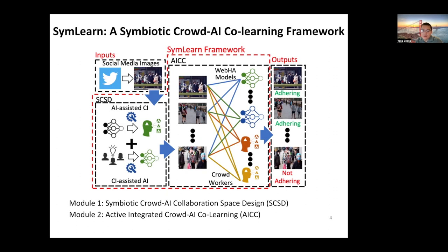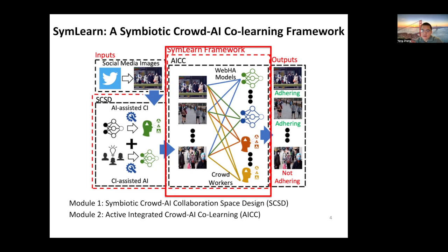In particular, we first design a novel search space for crowd-AI collaboration, which provides flexible options for SyMLearn to identify a collaborative set of AI models and crowd workers for joint estimation of WebHA labels. In addition, we develop a context-aware multi-armed bandit model that selects an optimized set of WebHA models and crowd workers from the search space for accurate WebHA estimation while minimizing the delay in order for the responses.